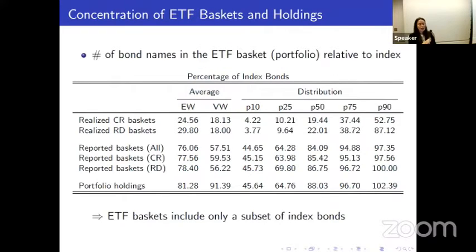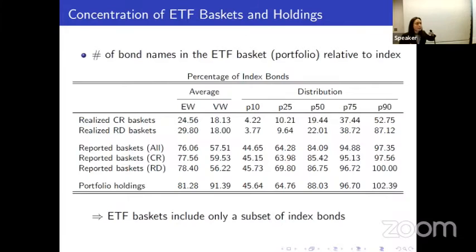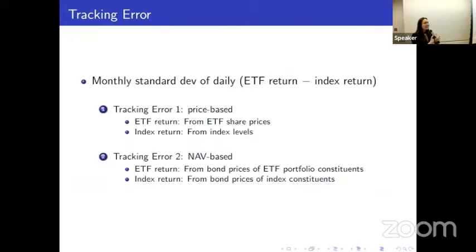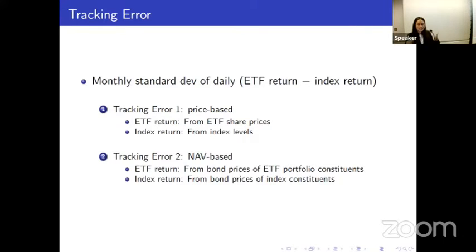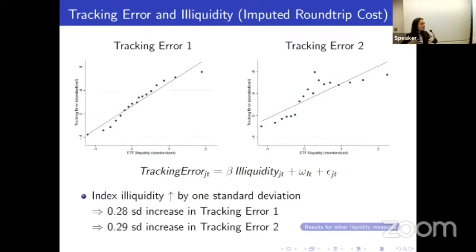Moving to basket concentration: the portfolio holdings number of unique bonds is around 80% of the index — consistent with these passive investors sampling. However, baskets are much more concentrated: realized baskets have only around 30% of the unique bonds relative to the index. Finally, we examine whether tracking error is increasing in the illiquidity of the index. We consider two versions of tracking error — one standard using ETF and index returns, and a second constructing returns directly from bond prices to alleviate stale pricing concerns. We find that tracking error is increasing in ETF illiquidity across both measures.